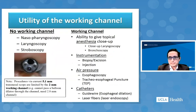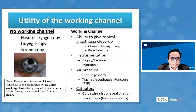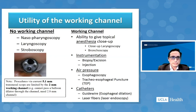You can give topical anesthesia close-up, do a close-up laryngoscopy or bronchoscopy, and put instruments through the working channel for biopsies, excisions, and injections. With air pressure, we can do an esophagoscopy. In patients with total laryngectomy, we can do tracheoesophageal punctures and voice prosthesis placement in the office. We can also do esophageal dilation using catheters and laser endoscopy by putting laser fibers through the working channel.